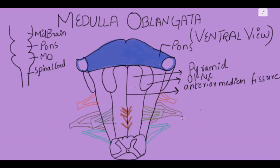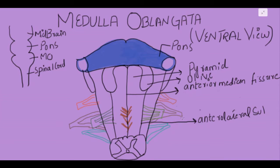Next we have a sulcus which divides the pyramid from the olive, and this sulcus is known as the anterior lateral sulcus.